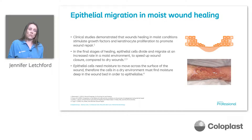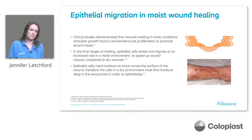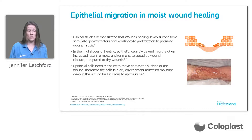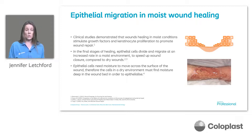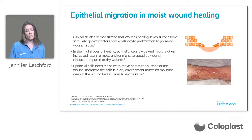Looking at epithelial migration in moist wound healing: these epithelial cells need a moist environment to be able to start the migration process across the wound bed. Clinical studies demonstrate that wounds healing in moist conditions stimulate growth factors which help those epithelial cells to proliferate and migrate across and repair the wound. They need that moisture in order to be able to migrate — therefore if the wound is too dry, it will slow that process down.